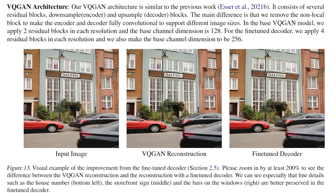In Muse, the encoder and decoder are fully convolutional to support different image sizes. Fine details such as the house number on the bottom left of the image are preserved perfectly.